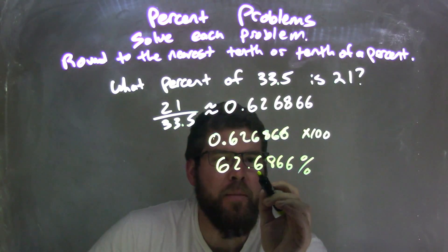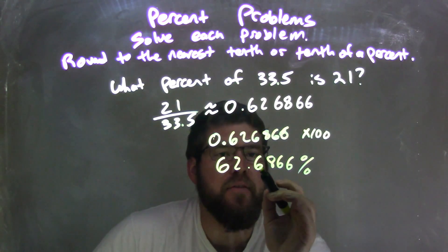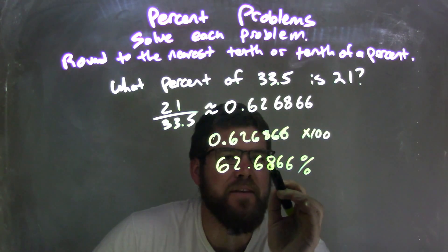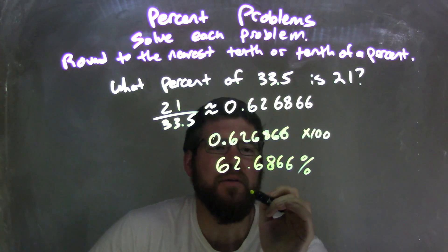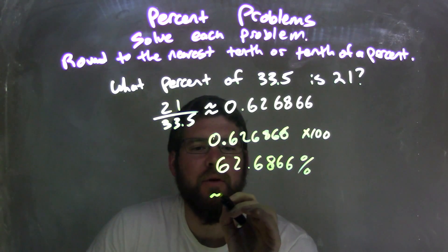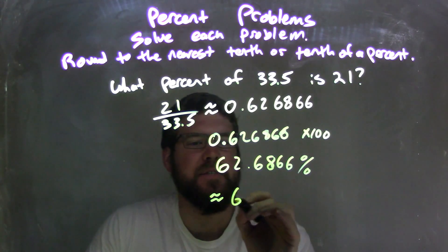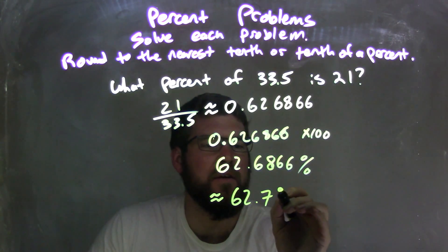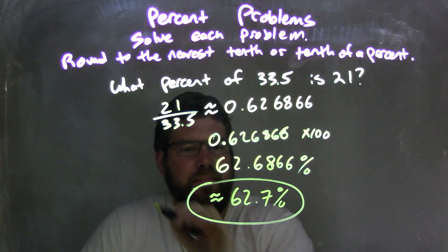Well, now I need to round that to the nearest tenth, and so that sixth looks at the eight. The eight raises it up one unit, rounds it up. So we're left with an approximately final answer here of 62.7%, okay?